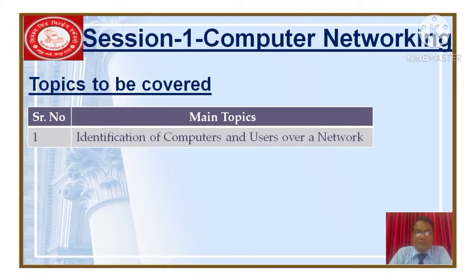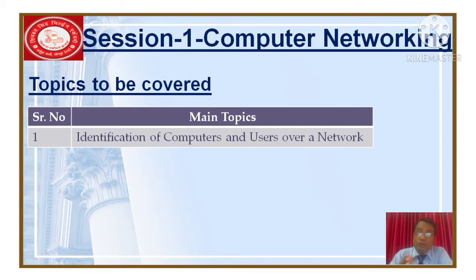We are going to start the next part of computer networking. In this topic, we are going to cover identification of computers and users over the network. It means in which way you will know your computer, because every computer, when it comes to a network, will be completely different. How does one computer communicate with another? How does a user communicate with your computer in a network? So without wasting any time, let's come to the next slide.